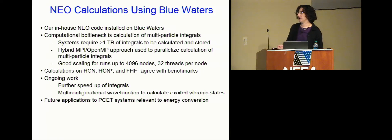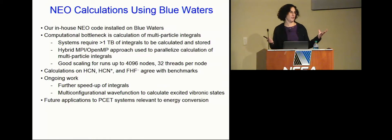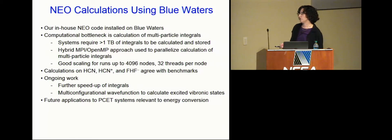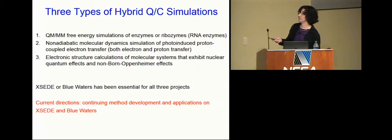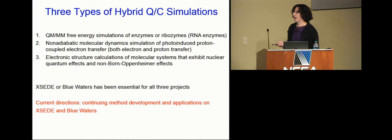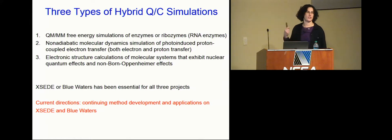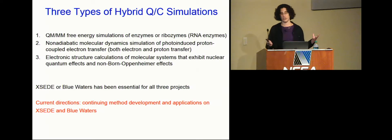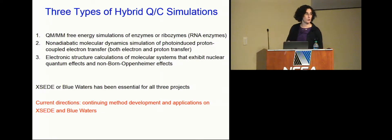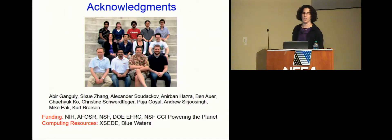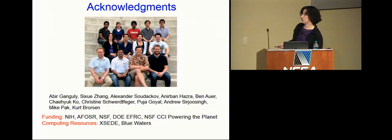To summarize: I've described three very different types of applications. The first ran on XSEDE; the second and third ran on Blue Waters. In all cases, they wouldn't have been possible on our own cluster — preliminary work was done there, but production-quality calculations required supercomputers. Current directions include continuing to develop the methods and algorithms to make them faster so we can ask more complicated questions, look at larger systems, and continue working with experimentalists to explain data, make predictions, and maybe design better catalysts. The ribozyme work was done mostly by Abir Ganguly.